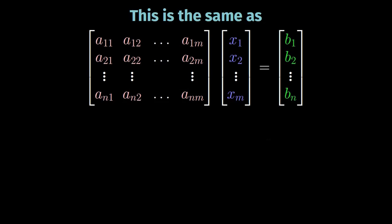The first way is the following. We observe that the system can be expressed as the product of the matrix of all the pink coefficients aij, which multiplies the matrix of the variables x1, x2, and so on until xm, and we ask the result to be equal to the column vector of the constant coefficients b1, b2, and so on until bn — here colored in green. The first is an n×m matrix, the second is an m×1 matrix, and the result will be an n×1 matrix.